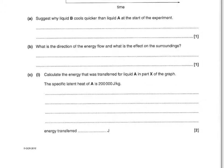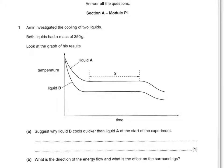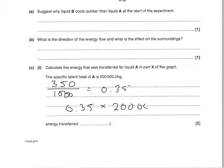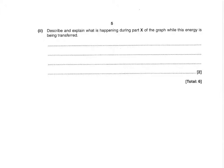Calculate the energy transferred for liquid A. The specific latent heat of A is 200,000 joules per kilogram. First, convert 350 grams to kilograms: 350 ÷ 1000 = 0.35 kg. Then energy transferred equals mass times specific latent heat: 0.35 × 200,000 = 70,000 joules. Describe and explain what is happening during part X while this energy is being transferred. Describing it: there's a change of state or it's freezing. Explaining it: the reason the temperature doesn't change is because bonds are being formed.